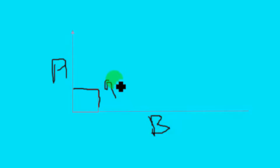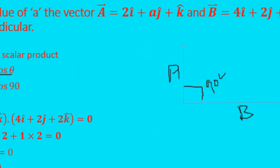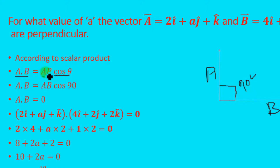For these two vectors to be perpendicular to each other, the angle between them must be equal to 90 degrees. When this angle is 90 degrees, according to the dot product formula a dot b = ab cos theta, we substitute theta = 90 degrees, giving us cos 90 degrees, which equals 0.